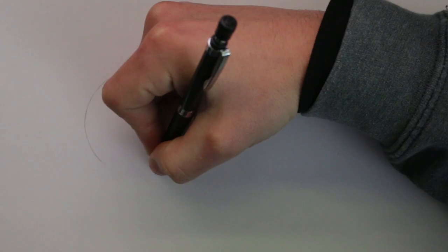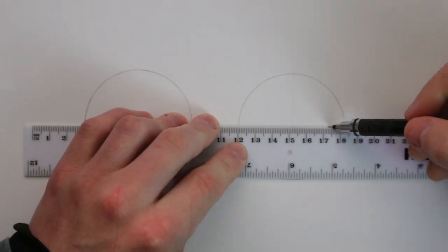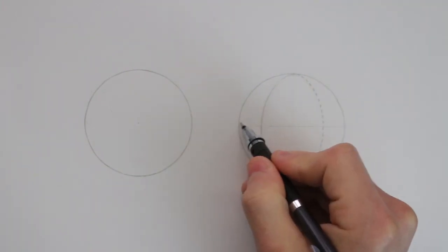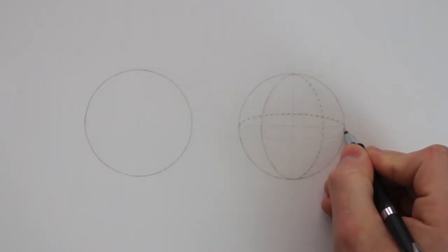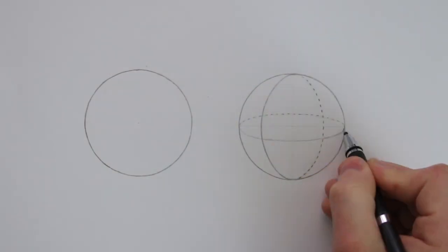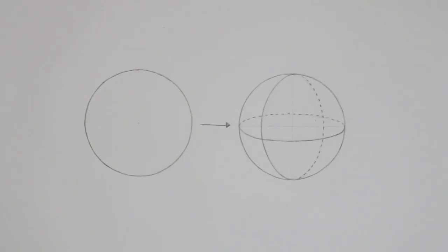Contour lines are not something that you haven't seen before. Earlier in this series, I had covered how to draw a sphere, explaining that in order to show its three-dimensional form, you have to wrap some contour lines around it, which in this case are simply ellipses.